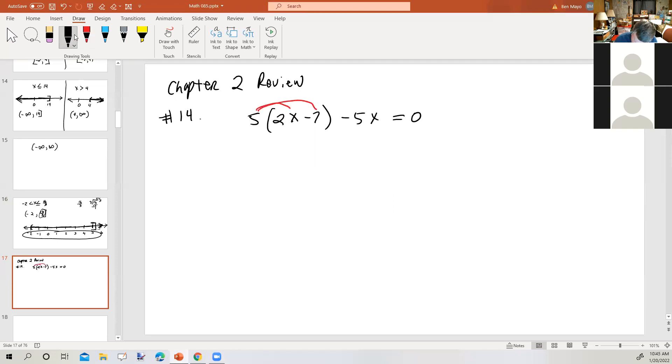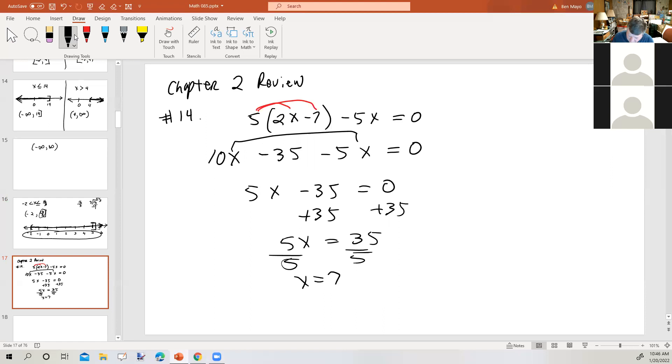So we're going to distribute the five. Five times 2x is 10x. Five times a minus 7 is minus 35. Then we bring down the minus 5x equals zero. Next, we're going to combine like terms. 10x minus 5x is 5x. So 5x minus 35 is zero. So far so good? Yes. Then we're going to add 35 to both sides to isolate the variable term. Divide both sides by 5 to isolate the variable.